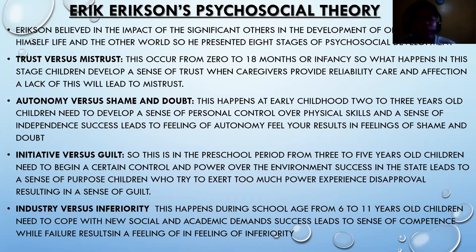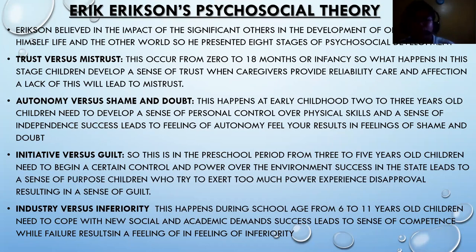The first stage is trust versus mistrust, occurring from zero to 18 months during infancy. Children develop a sense of trust when caregivers provide reliability, care, and affection. The next stage is autonomy versus shame and doubt, occurring in early childhood around two to three years old, where children need to develop a sense of personal control over physical skills and a sense of independence. Success leads to feelings of autonomy, while failure leads to shame and doubt.